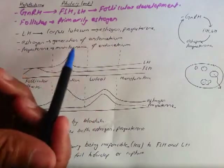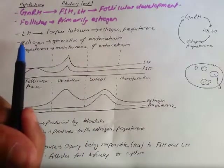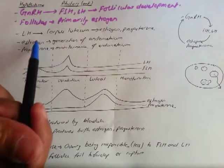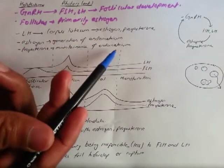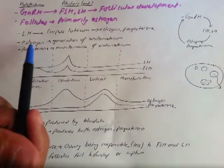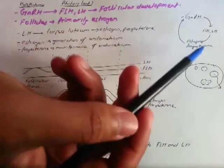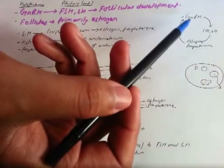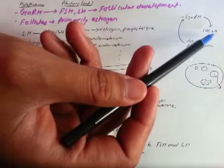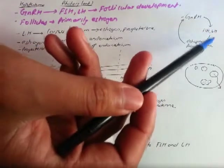We can think of it this way: if the levels of estrogen and progesterone are low, then the endometrium would break down, because their function is to maintain it. Here I have a little cycle showing that GnRH increases FSH and LH, which in turn stimulates the production of estrogen and progesterone.